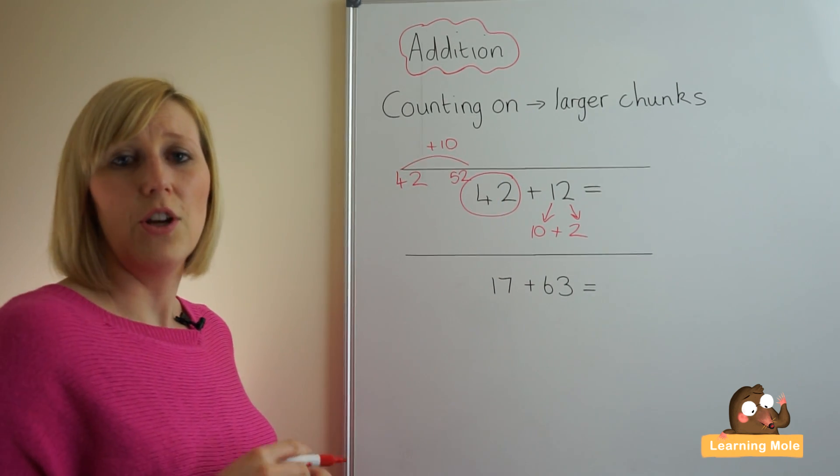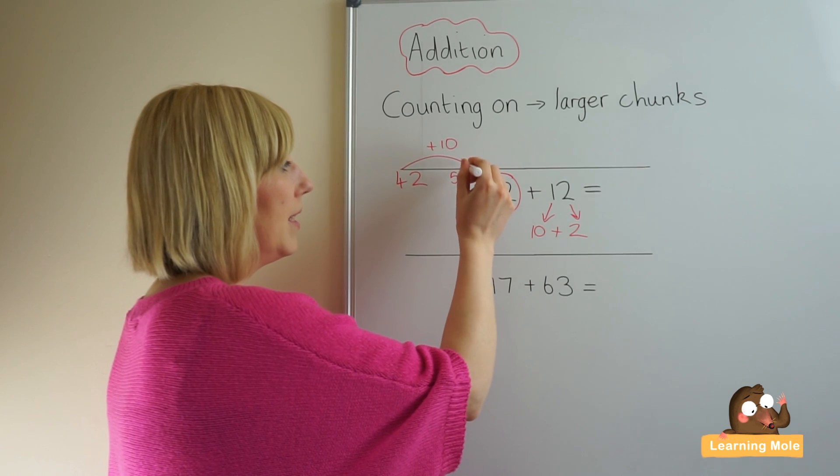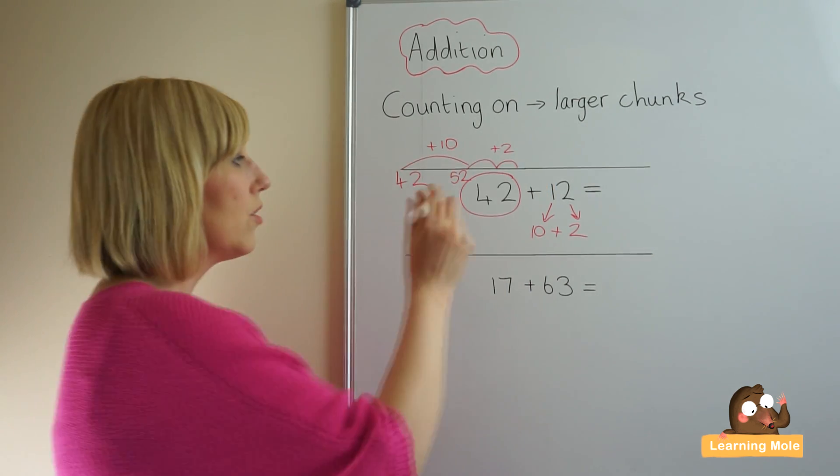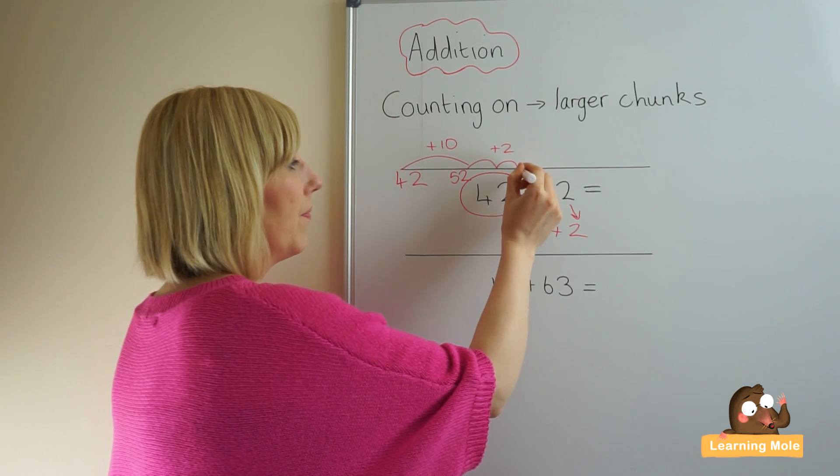Then we're going to add on our two units, and this can be done as one jump or two. It really doesn't matter to get to 54.